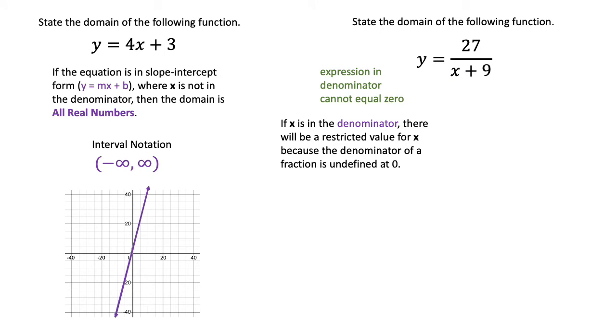That means the expression in the denominator cannot equal zero. x plus 9 cannot equal zero. You can actually write that out and solve for x. This will give you the restricted value. If I subtract 9 from both sides and do the work, I will find that x cannot equal negative 9.